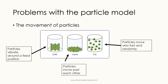The first problem with the particle model is that it doesn't really show the movement of particles. In these 2D diagrams it doesn't show how the particles are moving, so sometimes people interpret this as the particles not moving, particularly for the solid diagram. In the solid diagram, although the particles appear fixed, they're not — they vibrate around the fixed position. Relative to each other they stay in the same position, but they're vibrating about that fixed point.